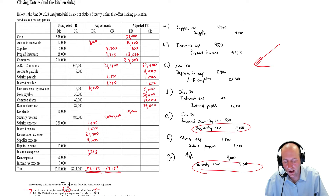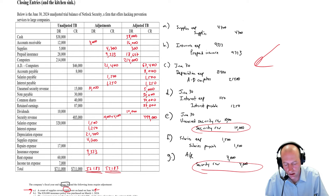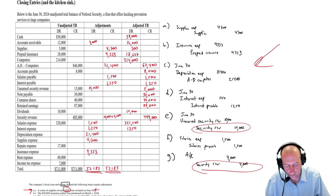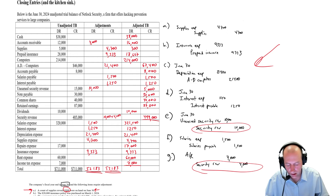Security revenue: $48,500 credit plus $14,000 credit in adjustments is $62,500 credit. Salaries expense: $320,000 debit plus $1,500 debit is $321,500 debit. Interest expense $1,250 debit, depreciation expense $21,400 debit, supplies expense $4,700 debit, repair expense $17,000, insurance expense $9,333, rent expense $60,000, and income tax expense $7,000. At that point, we are ready to rock.